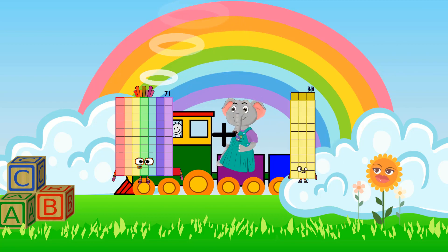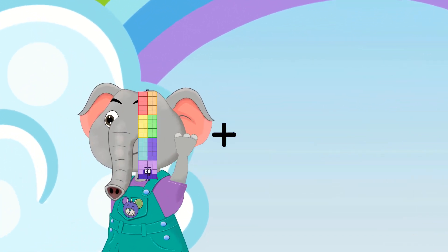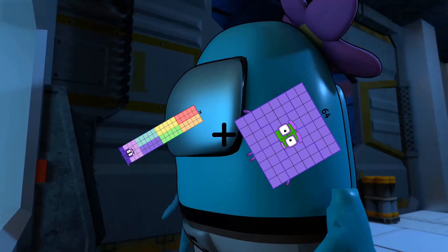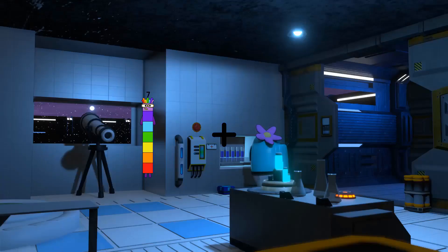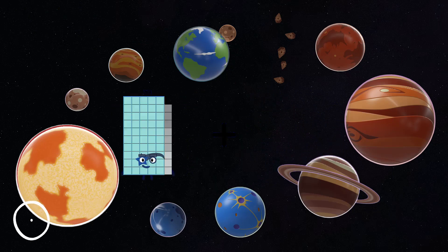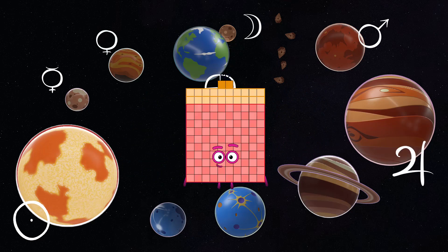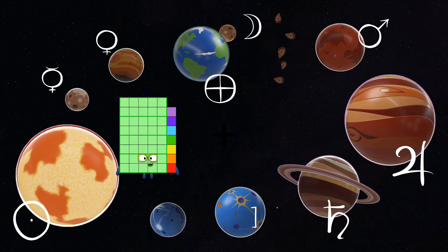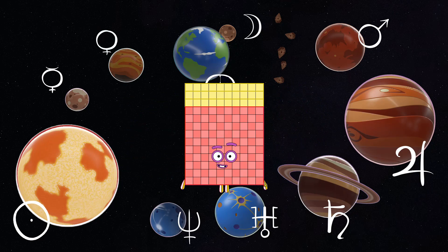71 plus 86 equals 157. 76 plus 64 equals 140. 7 plus 31 equals 38. 59 plus 63 equals 122. 47 plus 83 equals 130.